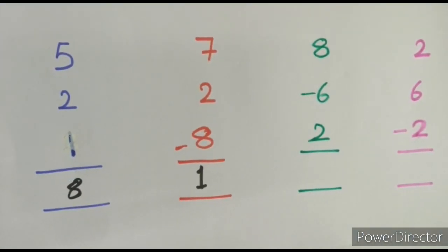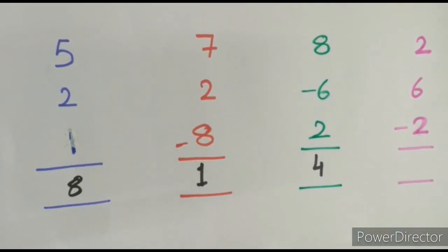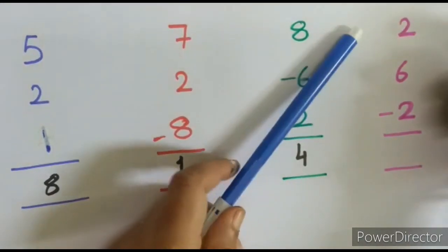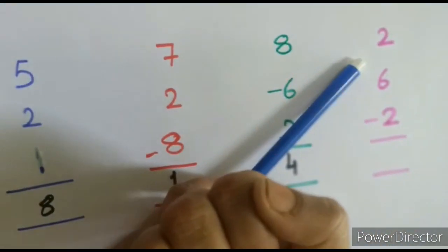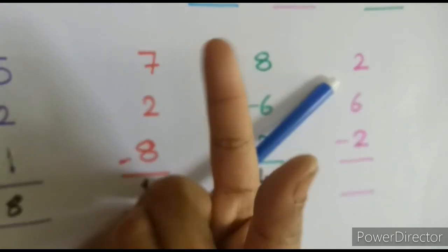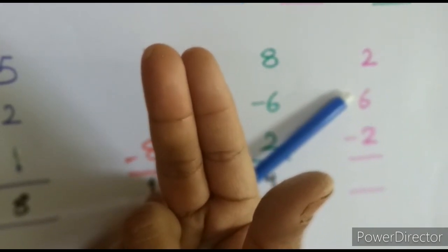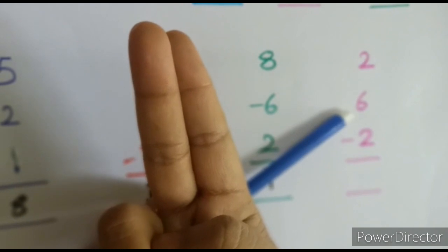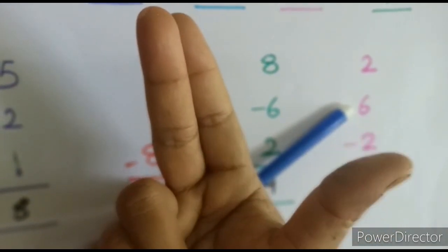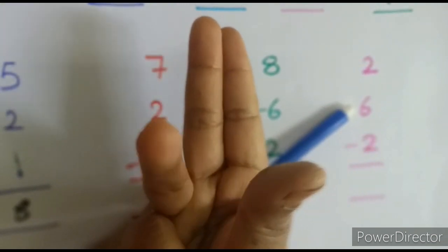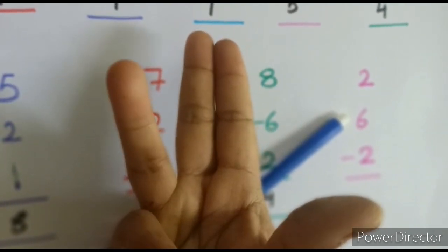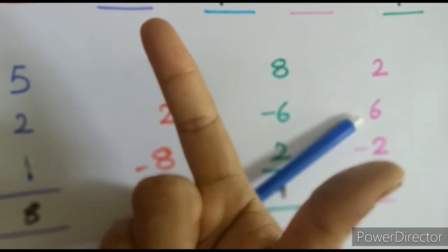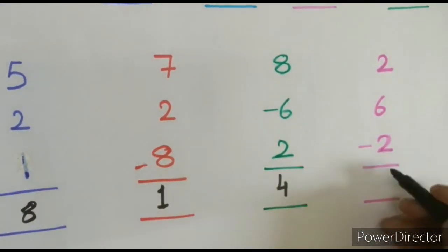Last example: plus 2 — open 2 fingers, 1, 2. Then plus 6 — open the thumb first which represents 5, then open 1 more finger because 6 is 5 plus 1: so 5, 6, 7, 8. Then minus 2 — close 2 fingers. The answer is 6.